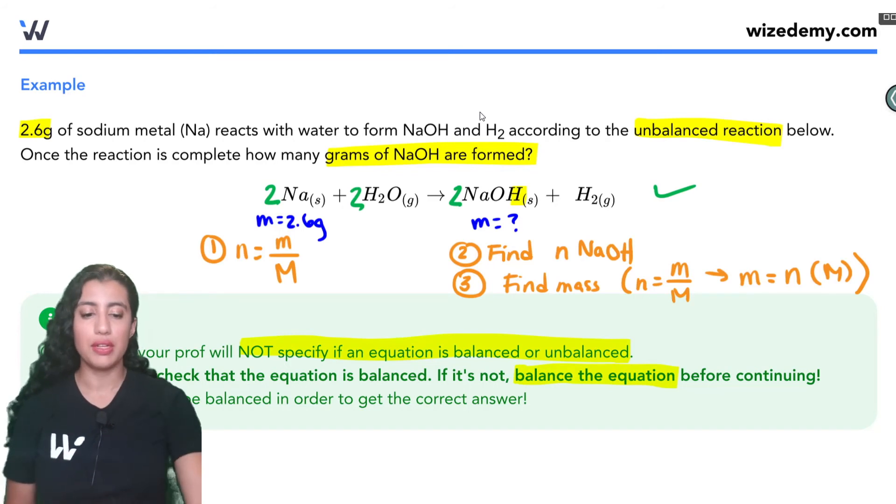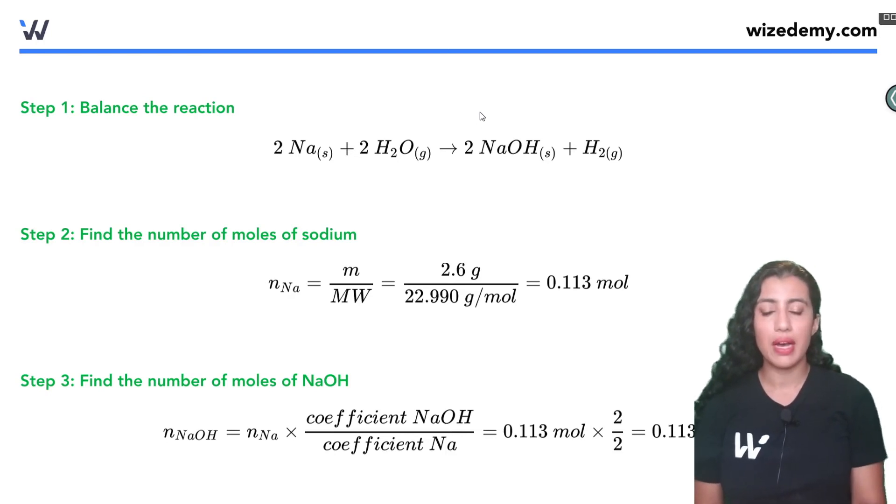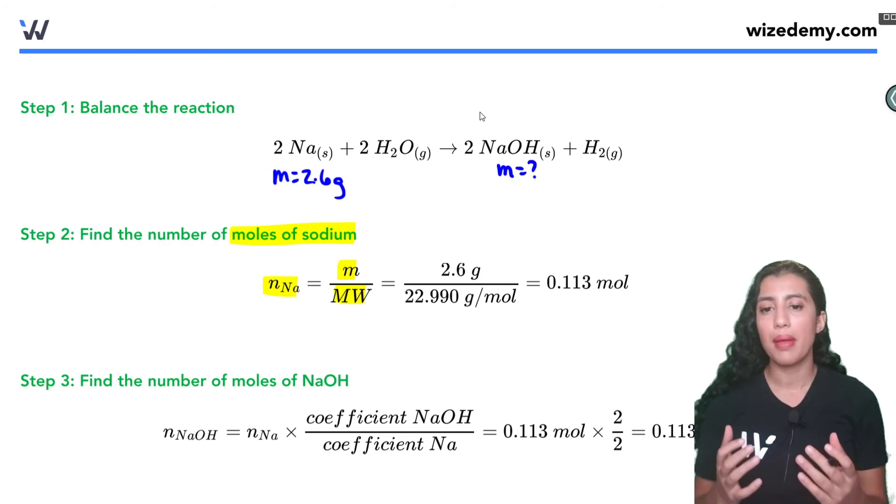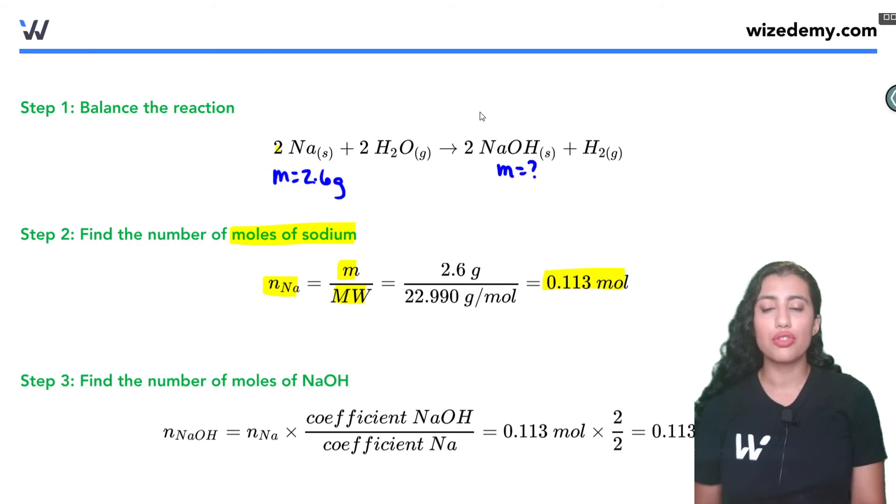Okay, so let's go ahead and see how this would be done. So the first thing like we said we had to balance this reaction, nice we already did that. The second thing we were just told that we had a mass of 2.6 grams here. So we said we wanted to first figure out the moles of sodium. So to figure out the moles of sodium we use the equation m over big M, sometimes other profs will write MW to represent molecular weight, but it means the same thing as molar mass, and when we do that for sodium we find that we'll get 0.113 moles. Great.